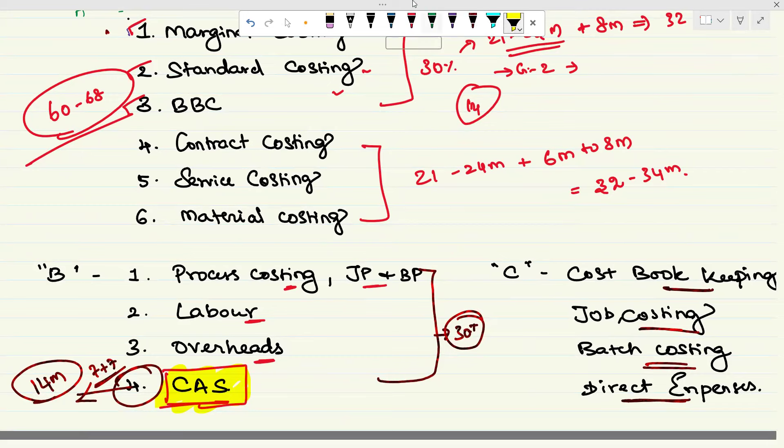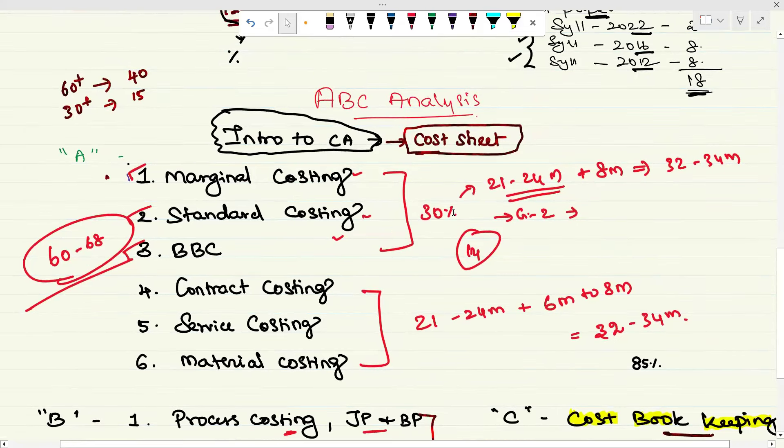If you want to leave some chapters, some students are feeling difficulty so I'm telling you can avoid the direct expenses part. If you have good knowledge about marginal cost, standard cost, and budget and budgetary control, you may skip cost bookkeeping, that is integrated cost accounting system. If you feel these two chapters, if you want you can omit it, but just learn the basics.